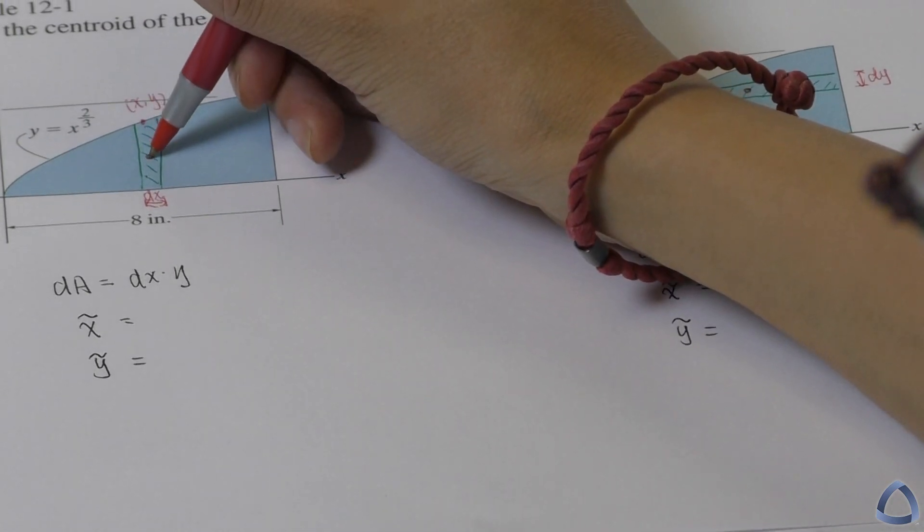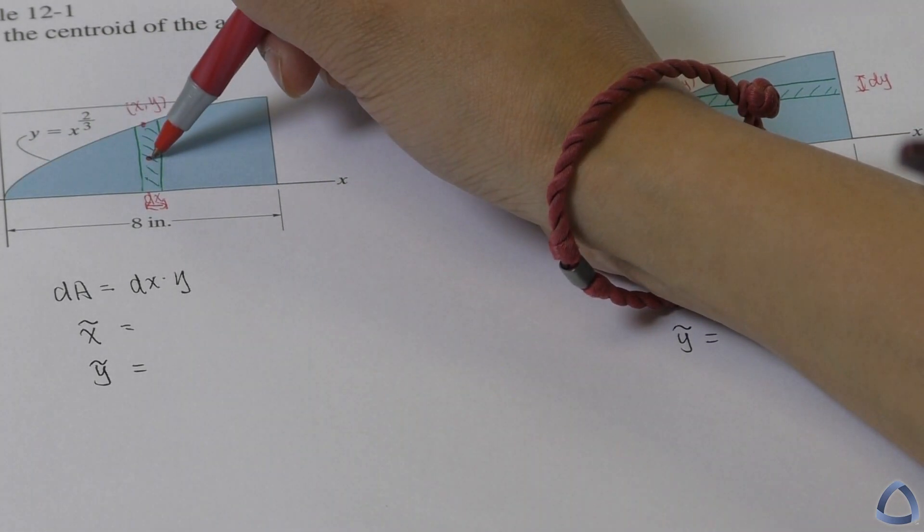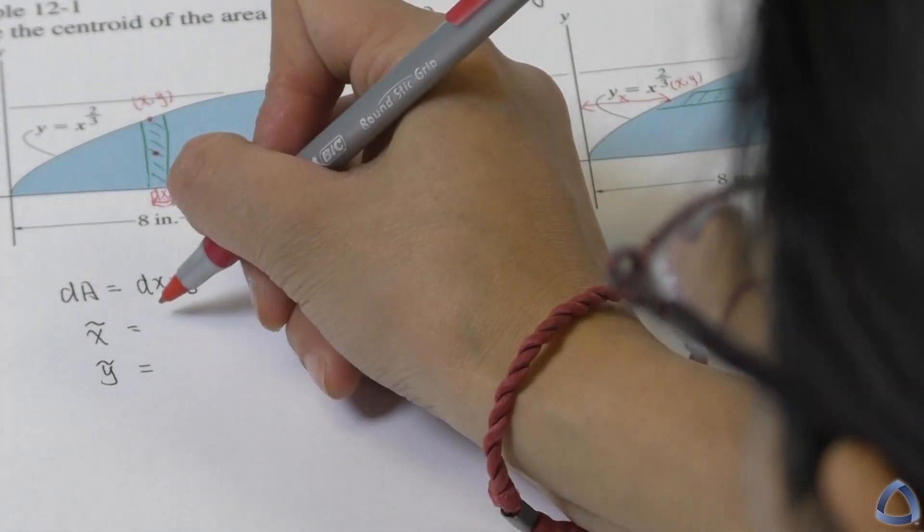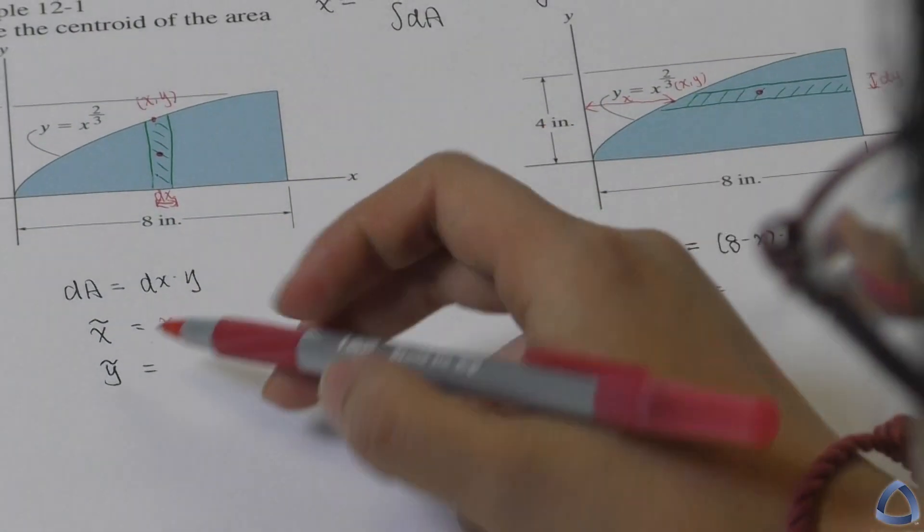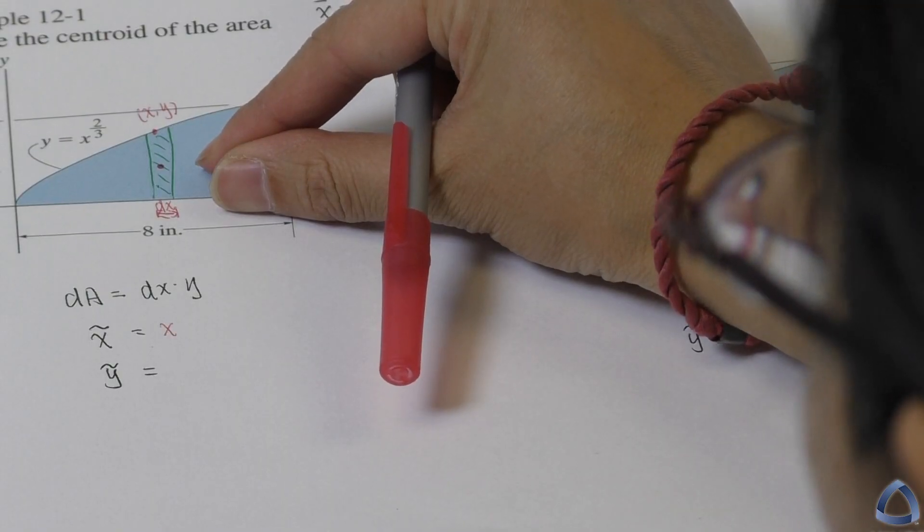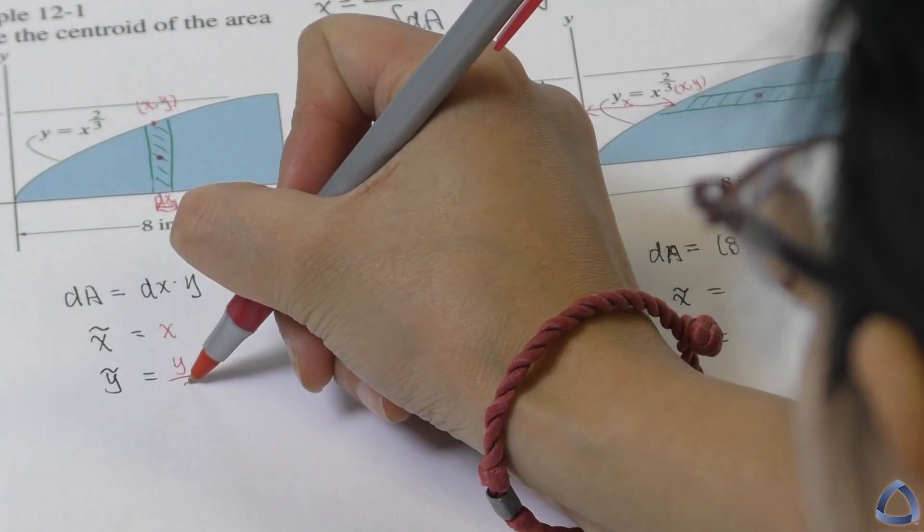You can see this point is x tilde location. Since we draw the little rectangular as small as possible, the x tilde for the vertical rectangle will be x. And then what about the y tilde? You can see it's halfway, it's in the middle. So that's why it's halfway of the y. So that's going to be y over 2.